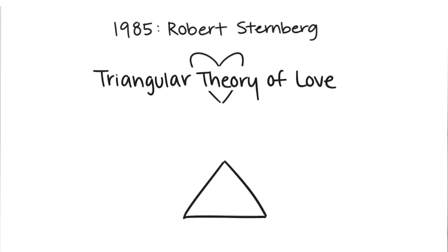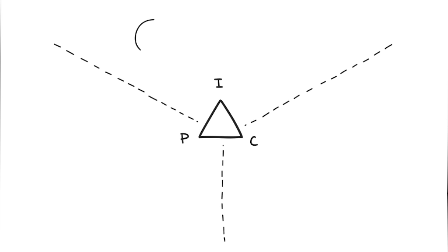In the context of interpersonal relationships, there are three components of love: intimacy, passion, and commitment. According to the theory, intimacy is the feeling of attachment, closeness, and connectedness.